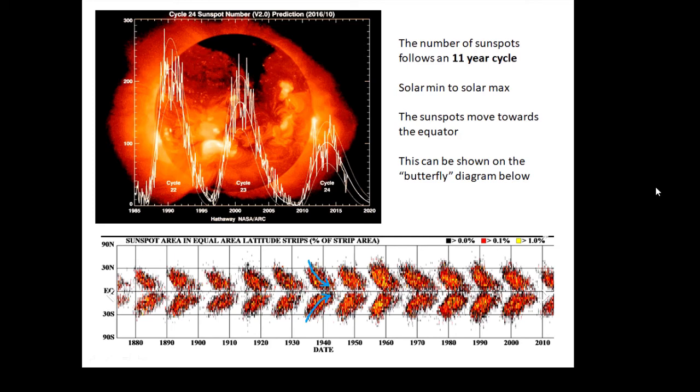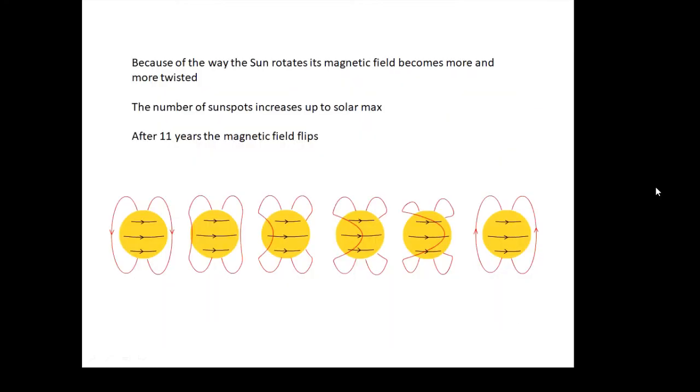Why does this happen? And it's all to do with the sun's magnetic field. Now the sun has a strong magnetic field, and as we said earlier, because the sun rotates faster in the middle, as time goes by what's going to happen is that the magnetic field is going to get twisted.